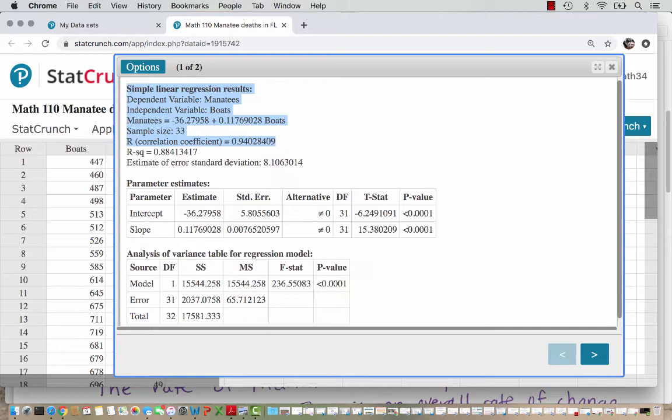Our correlation, what we're interested in, is very strong. It's 0.94. And then the next row gives us the r-square value. You find the r-square value by taking the correlation and multiplying it by itself. So that's also very strong.